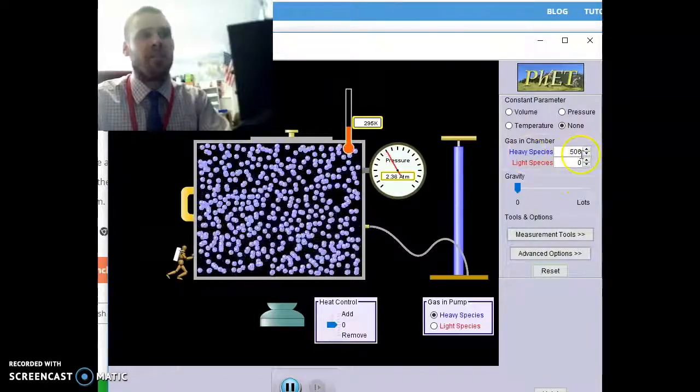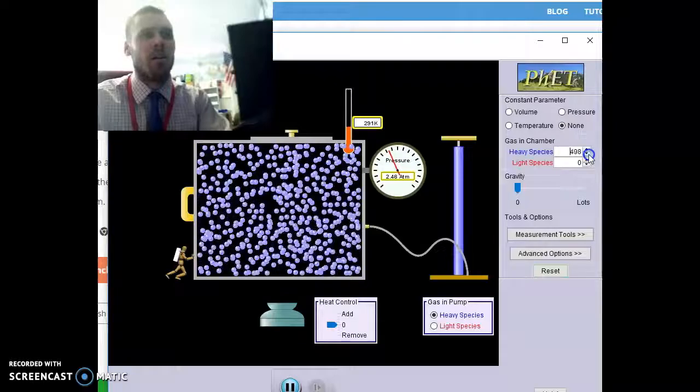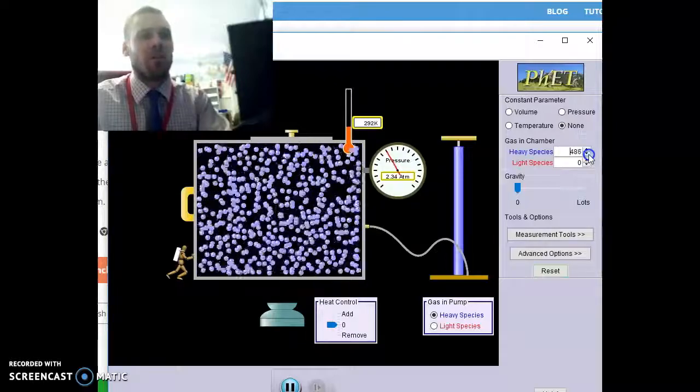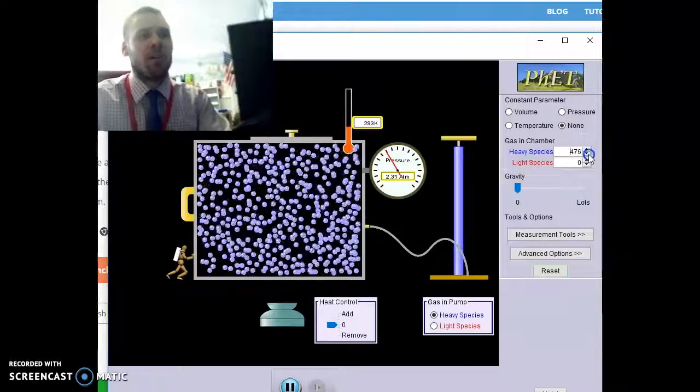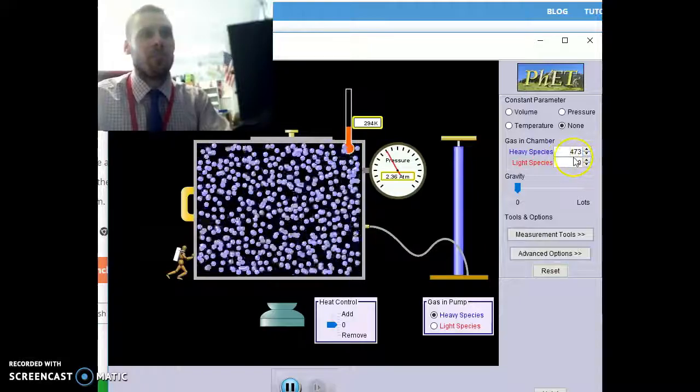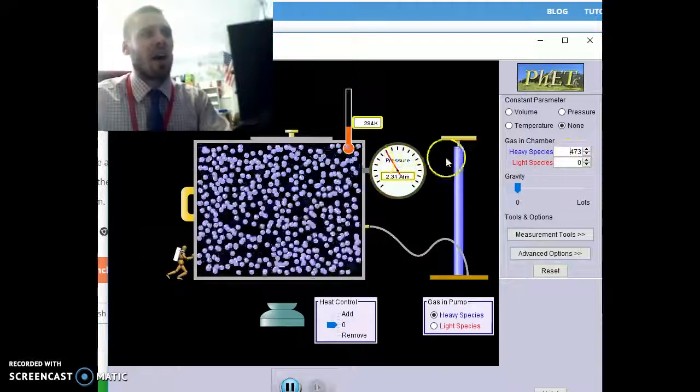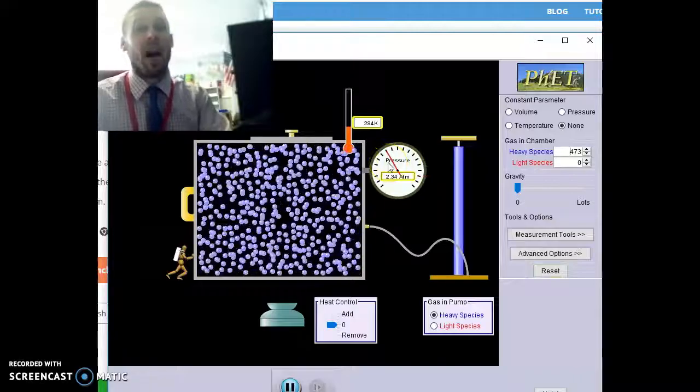Or you can change the heavy species by clicking the up and down arrow to change how many gas particles are also in that chamber. So you're going to go ahead, choose ten different data points, and look at how pressure is going to respond, and that's what you will be graphing.